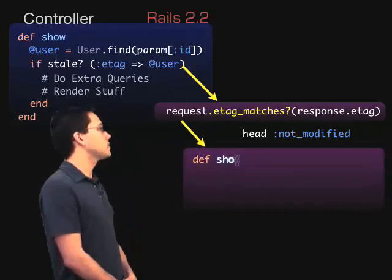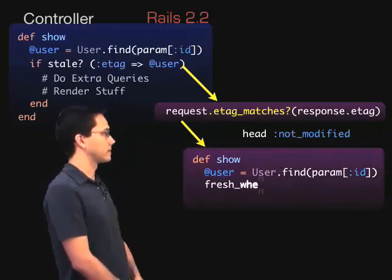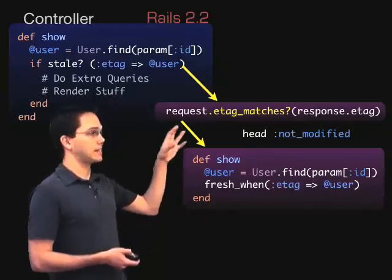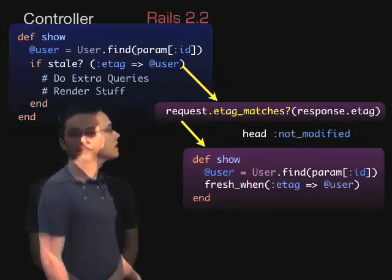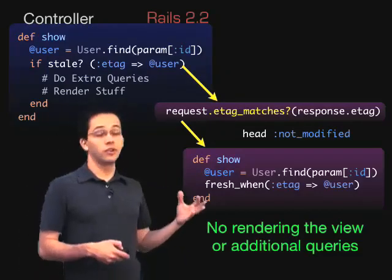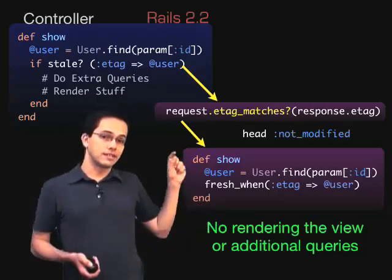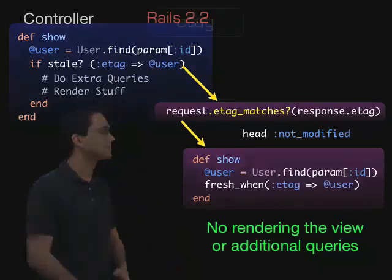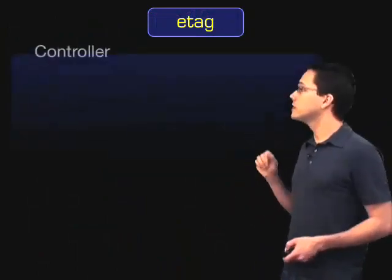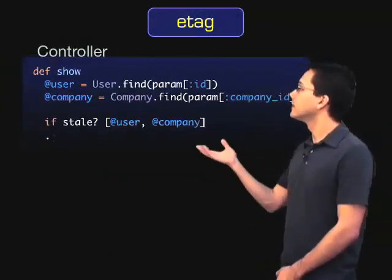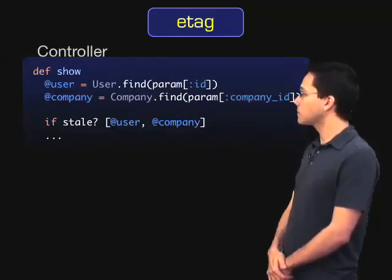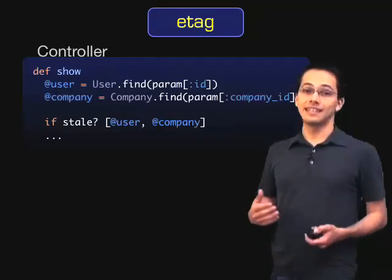Another way we can write this is by using the `fresh_when` function. The only difference is that the syntax is slightly different and we are not able to do that if statement that we can do with `stale?`. So using this customized e-tag, there's no rendering of the view or any additional queries inside that conditional, and things get even faster. However, what would we do if our webpage depends on two different models, say user and company? We would just pass both of those into an array and it would use both of those Active Record objects to create an e-tag.